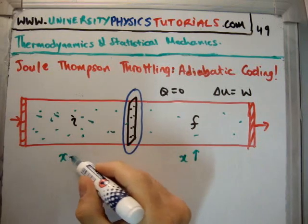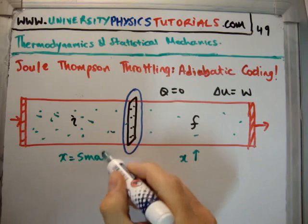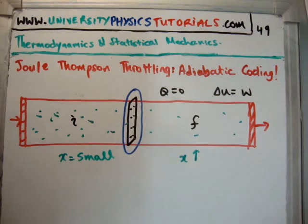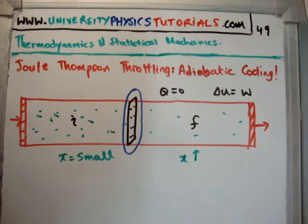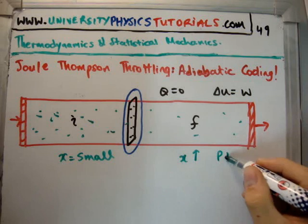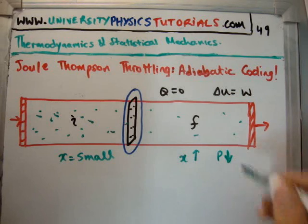Here X is small, let's say for argument's sake the intermolecular separation is small, here it gets larger. By definition if the intermolecular separation is getting larger then the pressure is going to go down. These are all important things that you should remember.